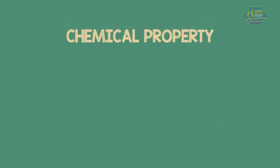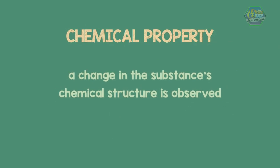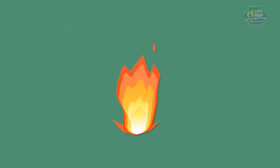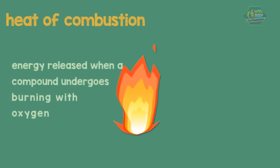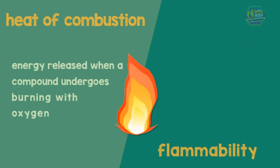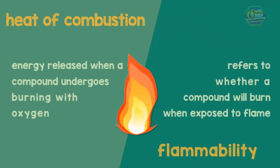For chemical property, a change in the substance's chemical structure is observed. This includes the heat of combustion, which is the energy released when a compound undergoes burning with oxygen, and flammability, which refers to whether a compound will burn when exposed to flame.